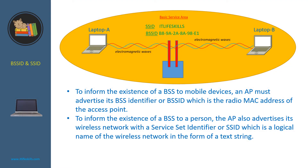Let's now learn about BSS ID and SSID. To inform the existence of a BSS to mobile devices, an AP must advertise its BSS identifier or BSS ID, which is the radio MAC address of the access point.